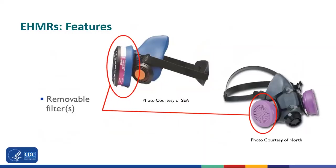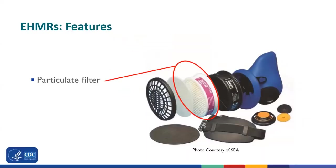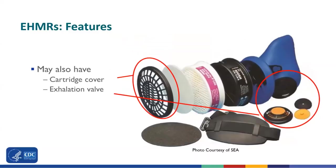Among the more important features of elastomeric respirators are removable filters, either one or two. On the right, you can see two filters that can be unscrewed when necessary. The particulate filter is the device that filters particulates and prevents them from being inhaled. The elastomeric respirator may also have a cartridge cover and an exhalation valve, including covers.